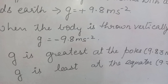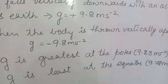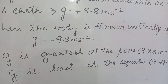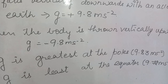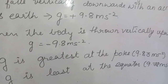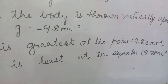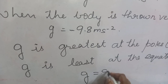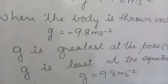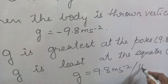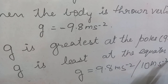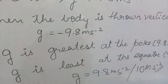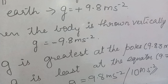Let us see how g varies on earth — where it is maximum and where it is least. g is greatest at the poles, that is north pole and south pole, at 9.83 meter per second square, and least at the equator at 9.8. Generally, we take g as 9.8 meter per second square, and sometimes in numericals it is given as 10 meter per second square.